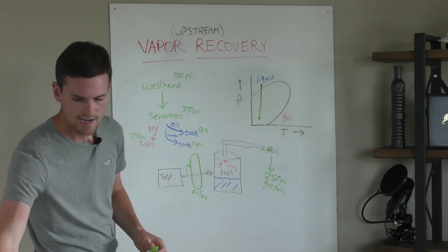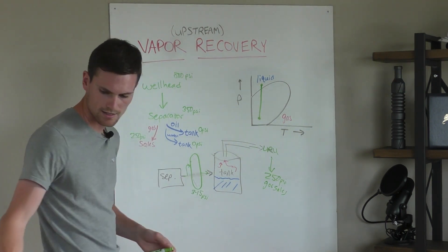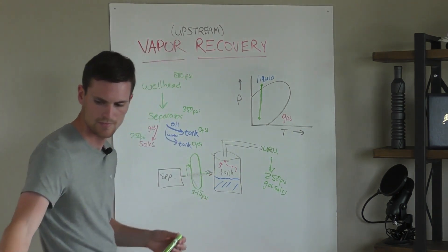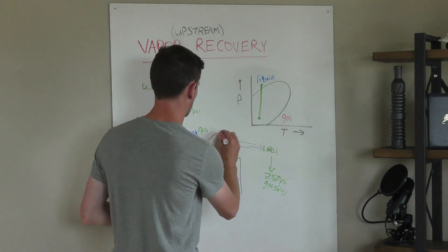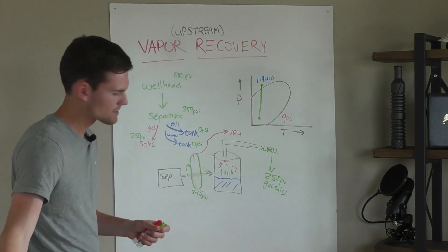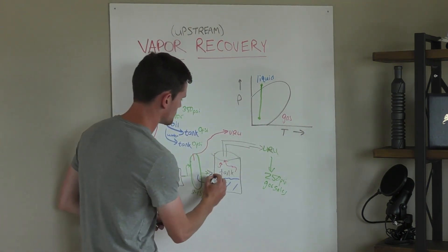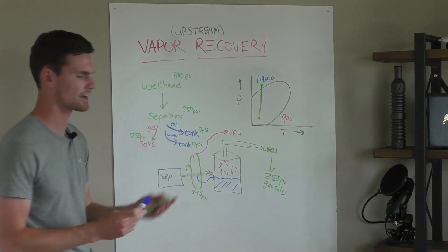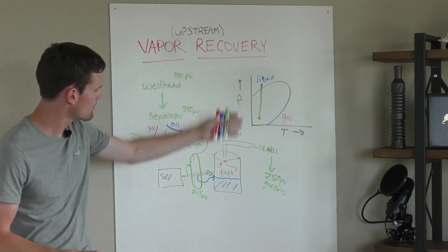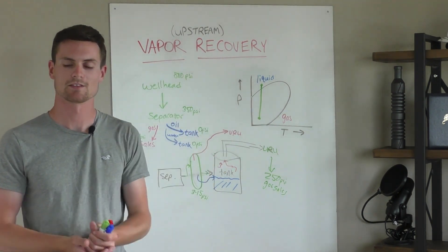You're also going to have lines coming off of it. So the gas is going to rise up. The gas is going to rise up to the top of the tower and go to your VRU. And your liquids, of course, they're going to dump into your tanks through whatever mechanism, however the tower is set up.